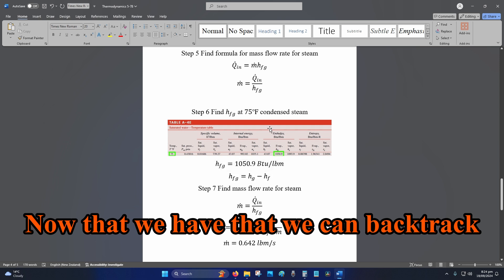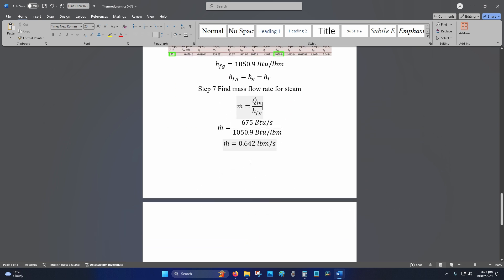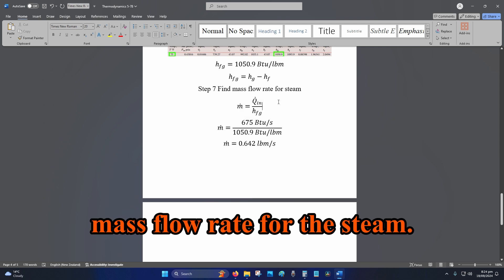Now that we have that, we can backtrack and find the mass flow rate. So step seven, find the mass flow rate for the steam.